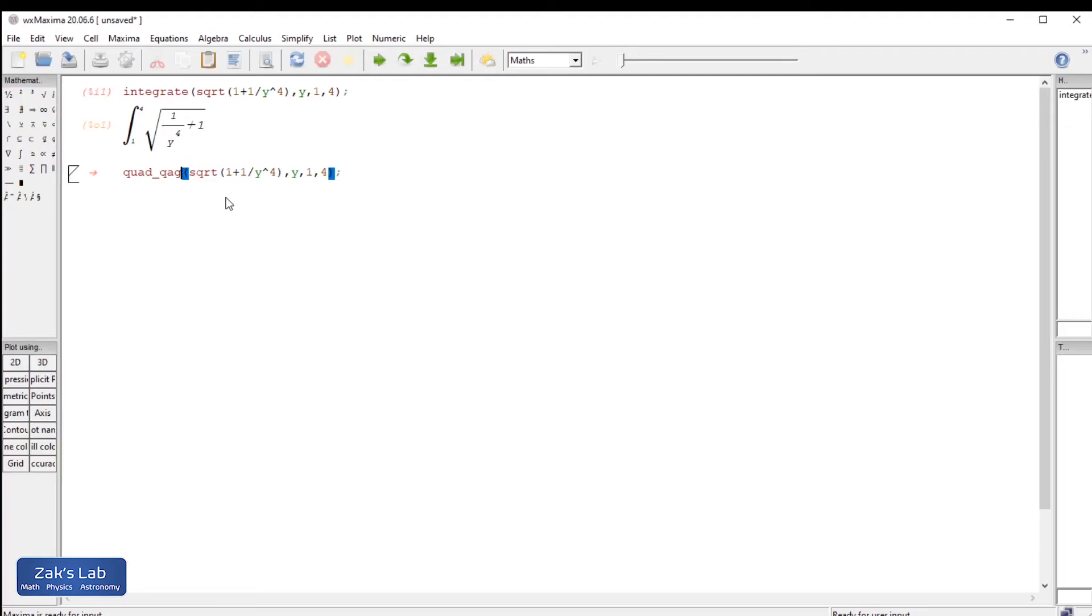QuadQAG. You type in the integrand, the integration variable, the limits of integration. And the last thing you have to put in is what algorithm to use, and it's just a number 1 through 6 for 6 different integration algorithms. And it doesn't matter for us which one we use. We're just trying to get a crude approximation anyway.